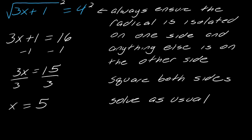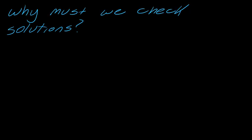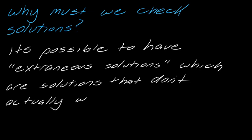Now, it's really important with these that you check your solutions. If I plug this back in, this becomes 3 times 5 plus 1, which is ultimately the square root of 16, and that does indeed equal 4. Now, you might be wondering why I keep harping on this. The reason is that with radical equations, something strange can happen — you can have what's known as extraneous solutions. These are solutions that don't actually work; when you plug them back in, it gives you something untrue.